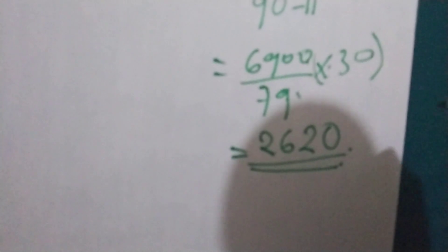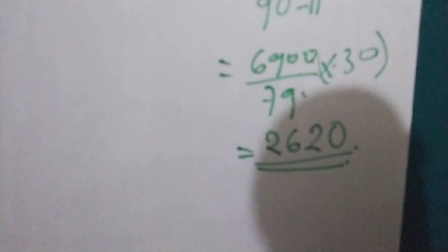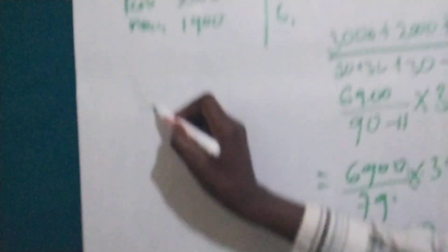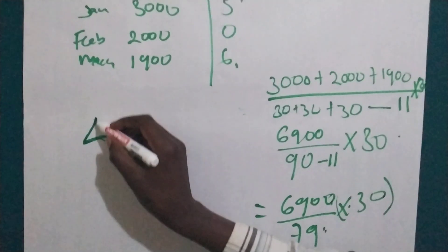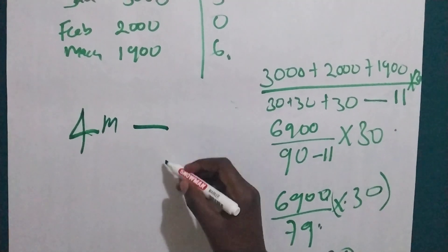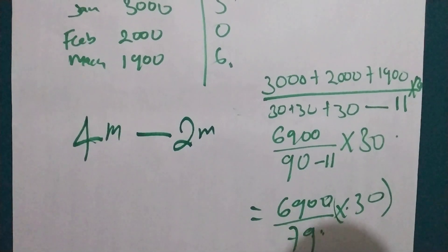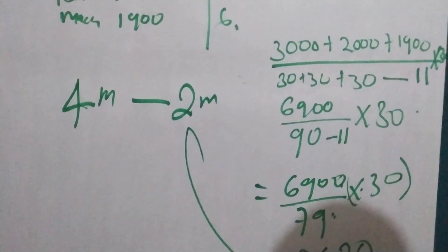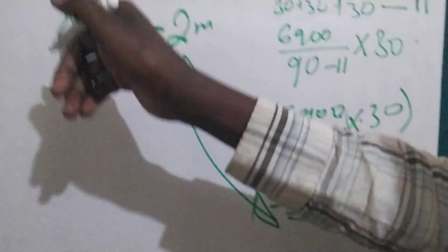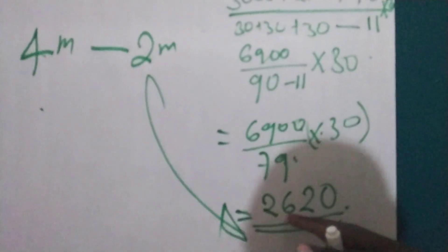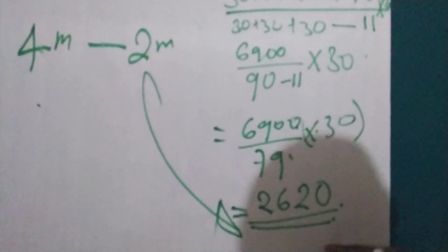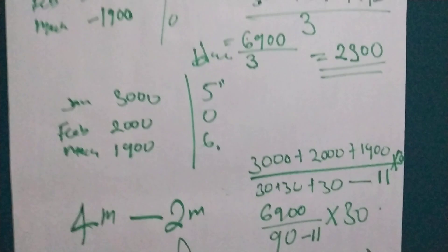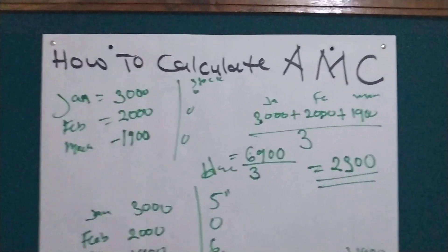How about if we want to calculate the amount to be ordered? The maximum stock level is 4 months and the minimum is 2 months. We multiply the average monthly consumption by 2 to get our minimum order, and multiply by 4 to get our maximum stock. That is all — now we can calculate the average monthly consumption. Thank you for watching and see you in the next one.